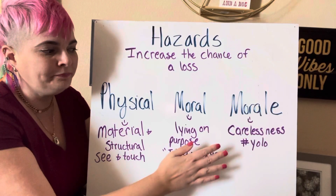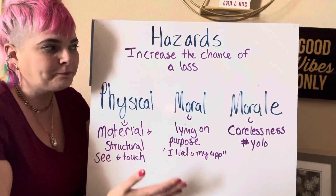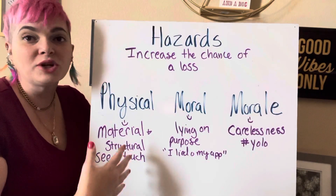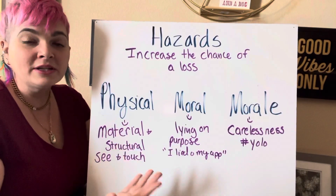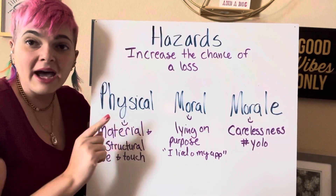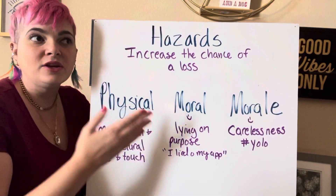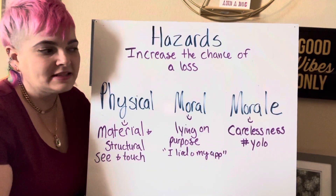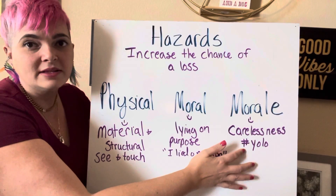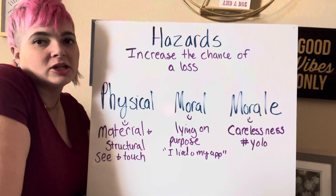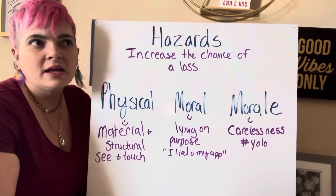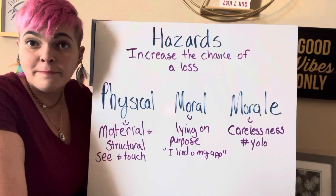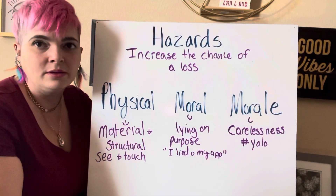On the state exam, you might see a question like: let's go smoke and drink because we're going to die anyway. Smoking and drinking fall into a physical hazard, but the attitude of 'we're going to die anyway' reflects that sense of carelessness — that's morale. Another example: it doesn't matter if my house burns down because the insurance company will rebuild it anyway. That careless attitude is morale.